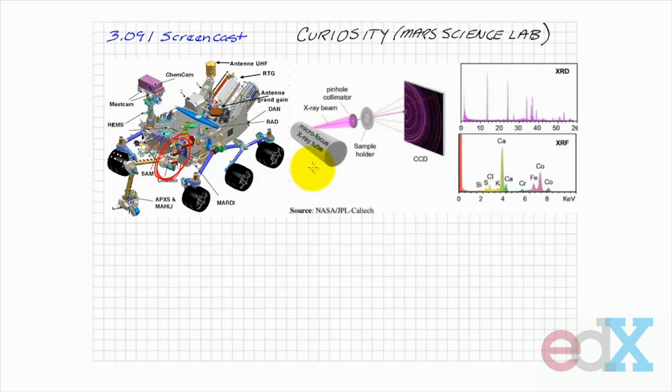The instrument incorporates an x-ray tube. As we've talked about, it generates x-rays. The x-rays are collimated by passing through a pinhole. The column of x-rays then pass through a sample holder, which contains a thin layer of powder composed of Martian soil.